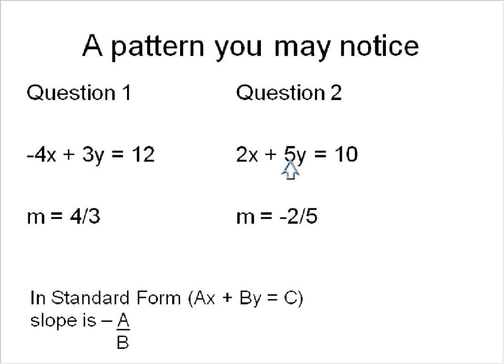In this one, a over b is 2 over 5, and we take the negative value of that, and we'll get a negative 2 over 5. So this is a pattern that we saw in the two questions that we did.